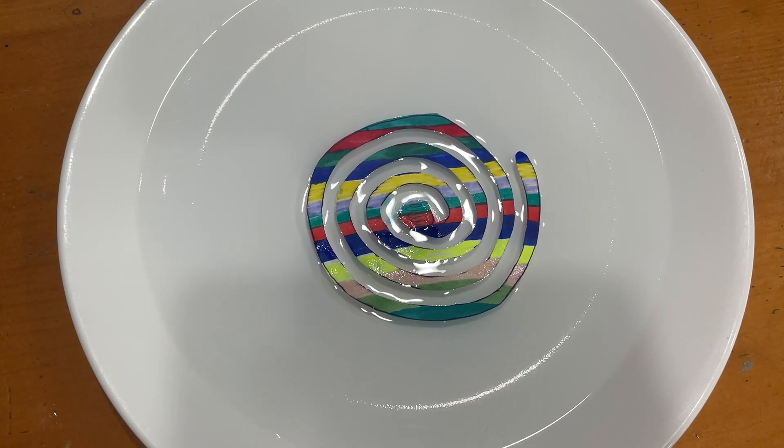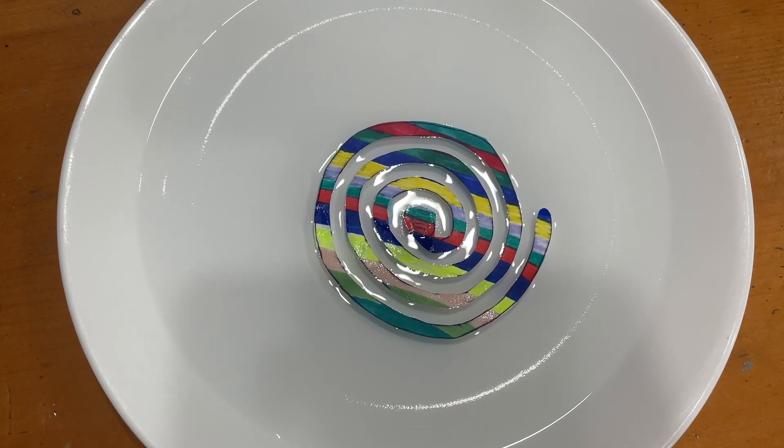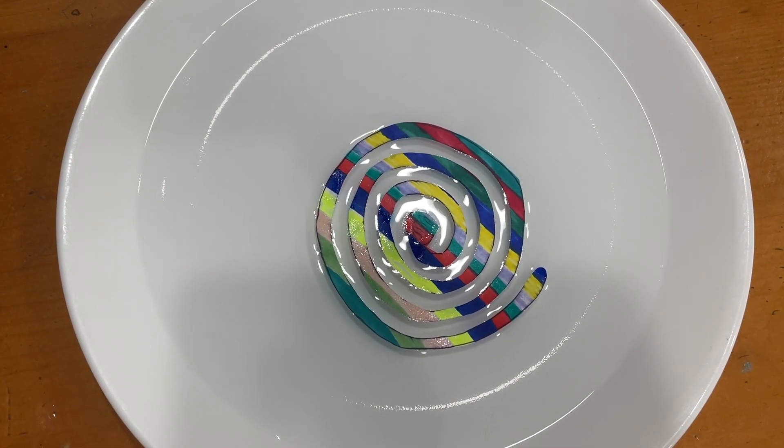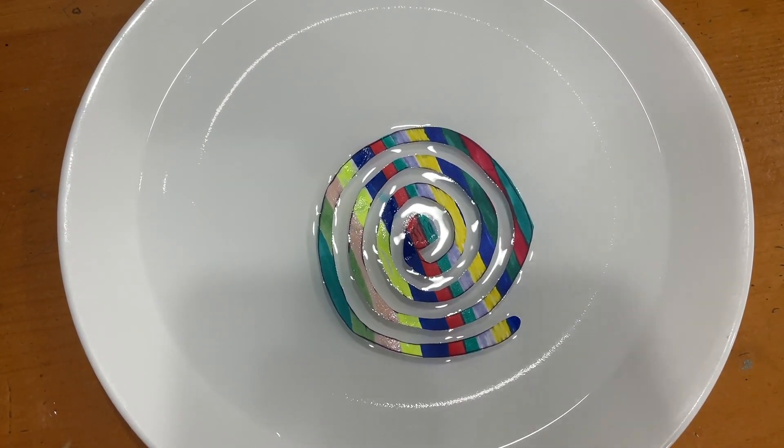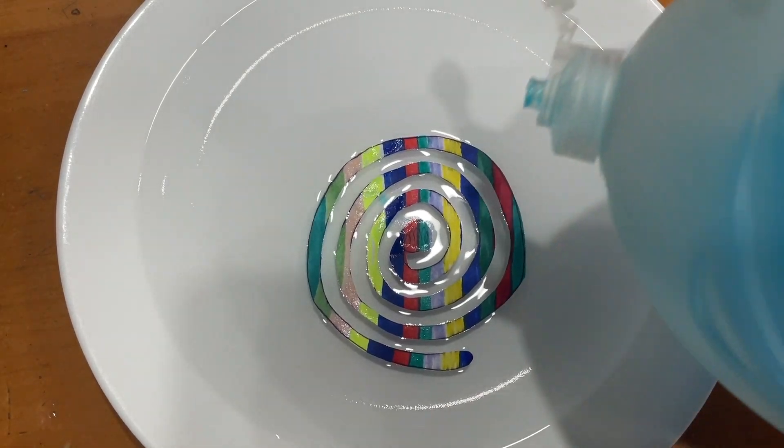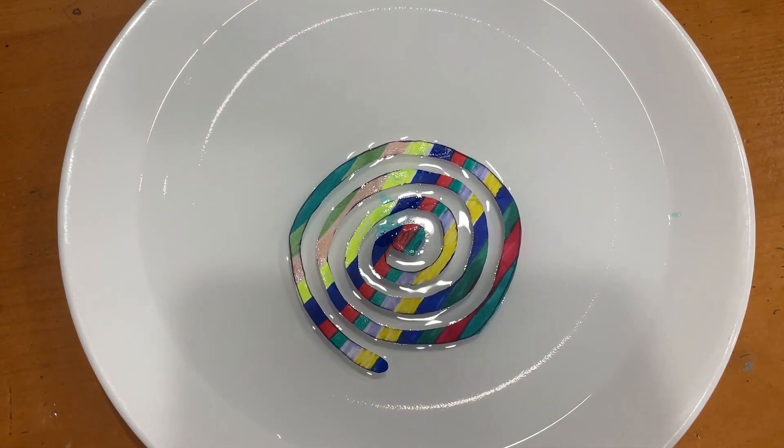...the soap pushes the water apart, breaking that skin and breaking the surface tension. That water movement pushes the spiral and makes it spin like magic, which is pretty cool. I tried to add a little bit more and it didn't really kick off because it's already broken that surface tension.